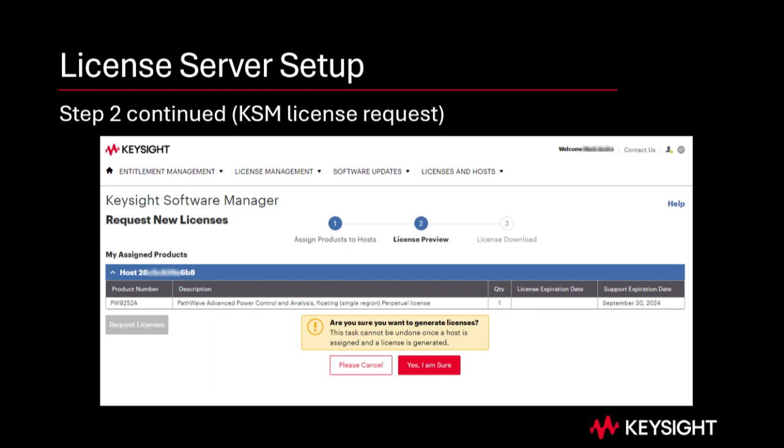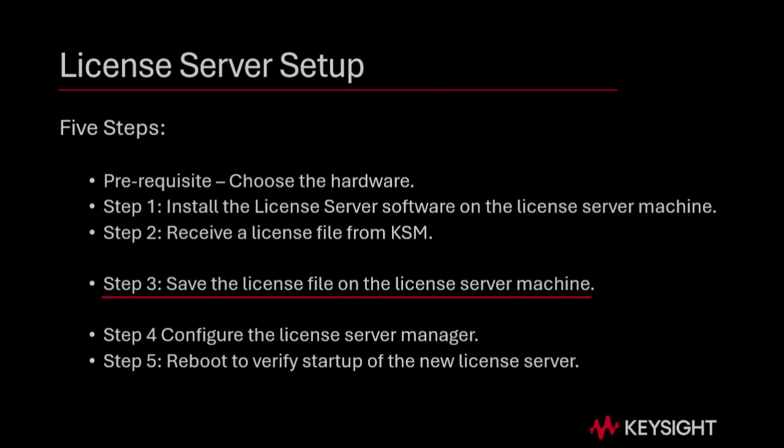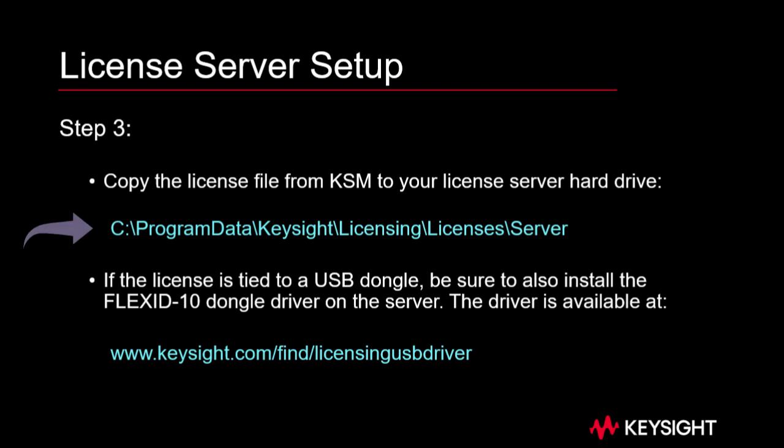The license file will be emailed to you or made available for download. Step 3: save the license file on the license server machine. Copy the license file to your hard drive. If the license is tied to a USB dongle, you must install a Flex ID 10 dongle driver on the server, available at keysight.com/find/licensingusbdriver.